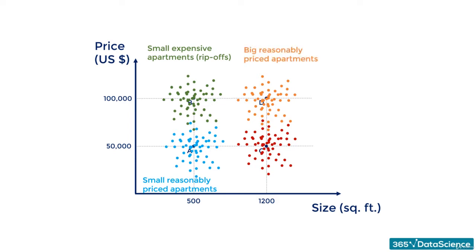D would represent big, reasonably-priced apartments. And C would represent big, cheap apartments, or bargains.